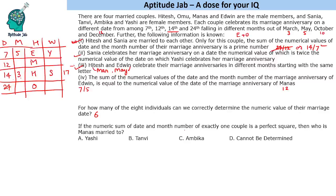If the numeric sum of date and month number of exactly one couple is a perfect square, who is Manas married to? The two dates remaining are 10 and 12. If we put 12 plus 12 or 12 plus 10, we do not get a perfect square. But if we put 24 and 12, we get a perfect square. However, the question asks who Manas is married to — we can determine that Manas is married in October, but we cannot tell who his wife is. So the answer cannot be determined.